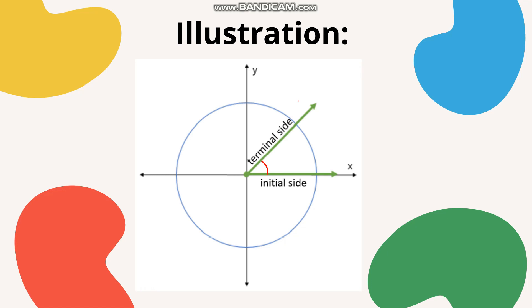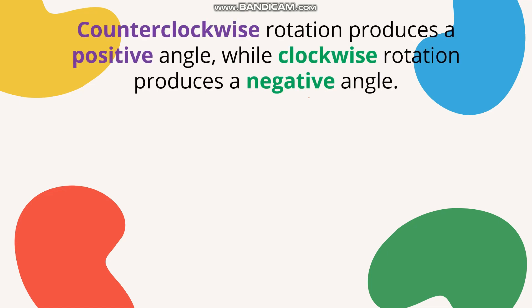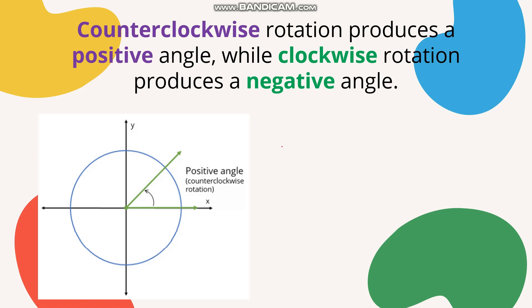Aside from the initial side, we also have what we call the terminal side — that is the other ray. The rotation of the terminal side affects the sign of our angle. The angle can be positive or negative depending on the direction of rotation. Counterclockwise rotation of the terminal side produces a positive angle, while clockwise rotation produces a negative angle.